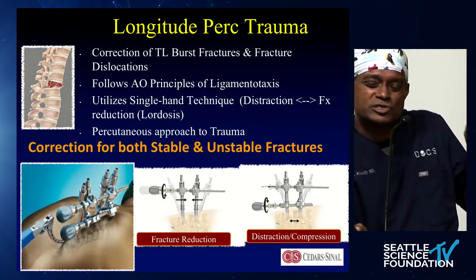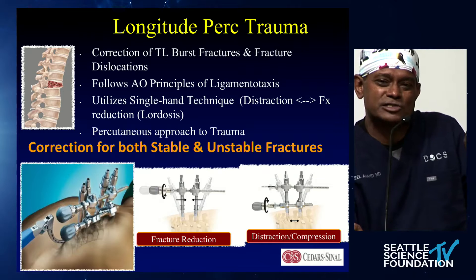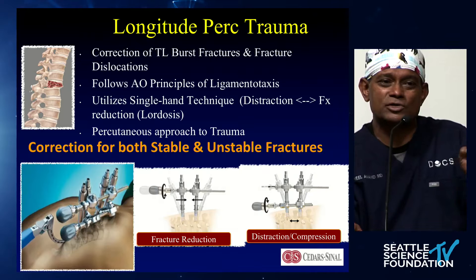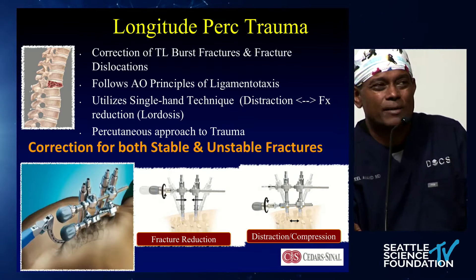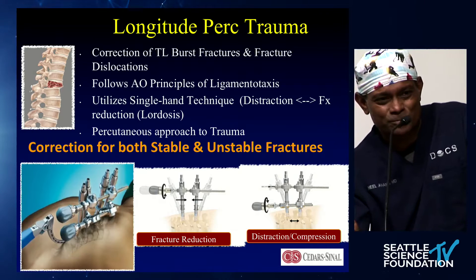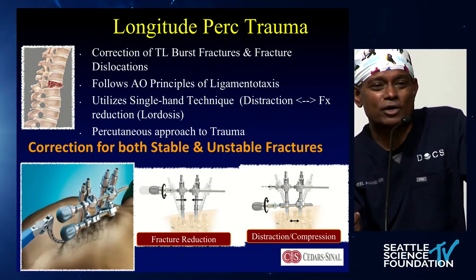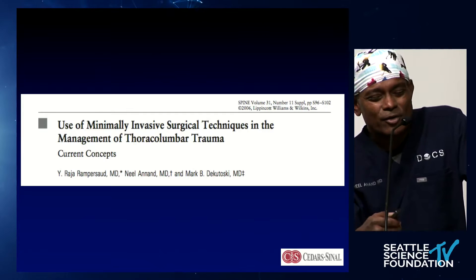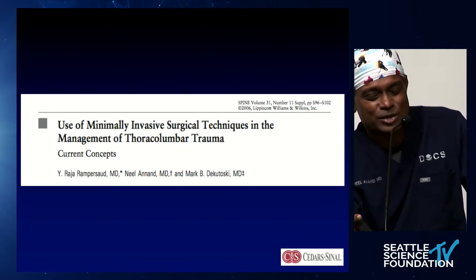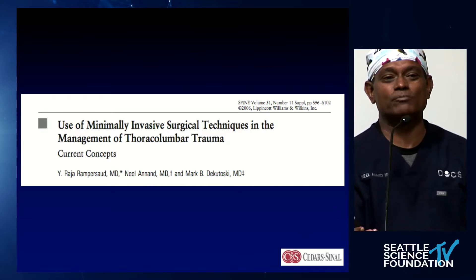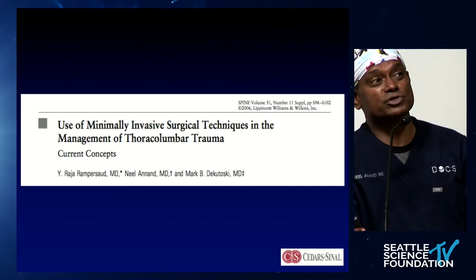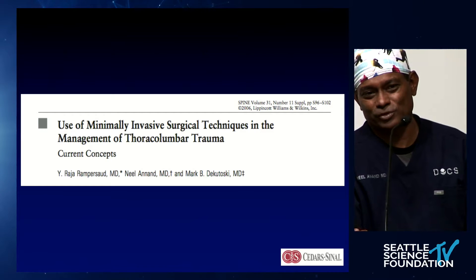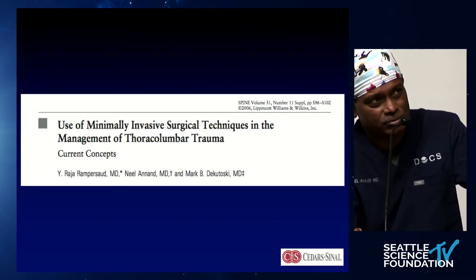You can address both stable and unstable fractures by understanding the mechanics of reduction percutaneously — using levers to compress or distract to get what you need. But honestly, the key is positioning, rod bending, and creating that reduction through the towers. Most of it occurs there. These concepts were published back in 2006, and a lot has come to fruition since then.